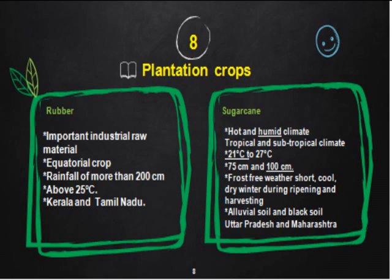Rubber is an important industrial raw material; tires, toys, tubes of vehicles, and various products are made from natural rubber. It is grown in tropical regions like Thailand, Malaysia, and Indonesia, and in subtropical areas as well. It requires a moist and humid climate with rainfall more than 200 centimeters and a temperature of 25 degrees Celsius. Rubber is mainly grown in Kerala and Tamil Nadu. Thailand is the largest producer of rubber in the world, and Kerala ranks first in India with 90 percent of India's rubber production.